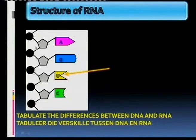Let's look at the structure of RNA. We'll see that RNA consists of a phosphate, and the sugar here is ribose.